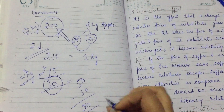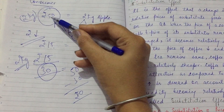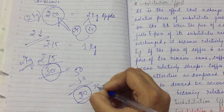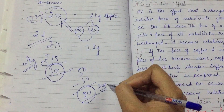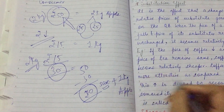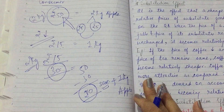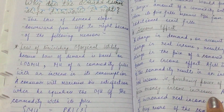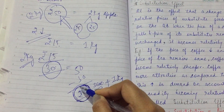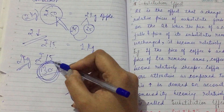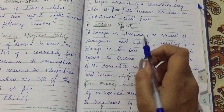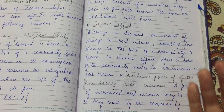You can see that 20 rupees are saved from the fall in apple's price. Now, with this saved amount, the consumer can buy 1 additional kg of apple. So the fall in price leads to an increase in quantity demanded due to the income effect.